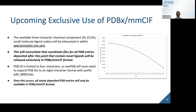This is a very opportune time to learn about PDBX-MMCIF. The graph on the right describes the three-character chemical component IDs, or ligand IDs — the three-letter codes used for small molecules bound to protein structures or DNA ligands. These codes are running out and will be exhausted in approximately one year, possibly end of 2023 or beginning of 2024. Once that happens, any PDB entry deposited after that point containing a novel ligand will be released exclusively in PDBX-MMCIF format. So for anyone interested in structure-based drug design or ligand interactions, this is the perfect time to learn PDBX-MMCIF.